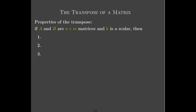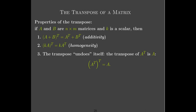So we now have important properties of matrices. The transpose has additivity — the transpose of the sum is the sum of the transposes — and it has homogeneity. There's also a nice property that the transpose undoes itself: if you take the transpose of the transpose, you get the same matrix back.